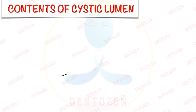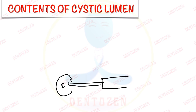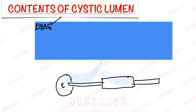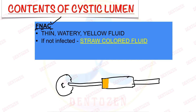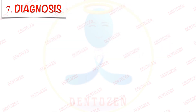Cyst contents: on fine needle aspiration cytology (FNAC), dentigerous cyst yields a thin, watery, yellow fluid. If not infected, it is straw-colored fluid. If infected, it can be pus or blood-tinged.